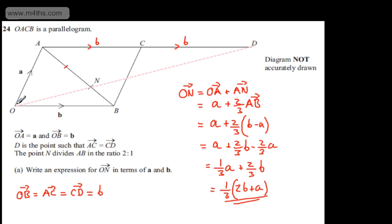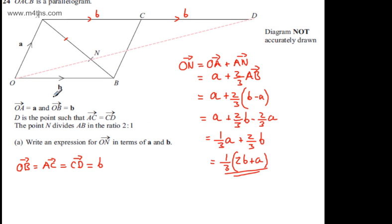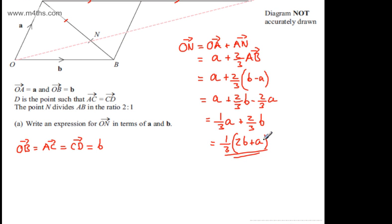What I want to do is go from O to D. All I'm going to show is that it's a multiple of the vector ON. We know that O lies on both of the lines, so I'm going to show that it's a multiple of this particular vector.